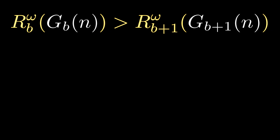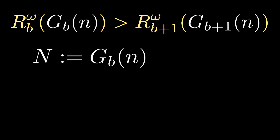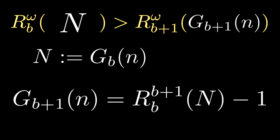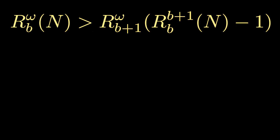Specifically, if we have two consecutive terms G_b and G_(b+1) of a Goodstein sequence, why is R_b_omega of G_b greater than R_(b+1)_omega of G_(b+1)? For notational simplicity, let's use n to denote this term G_b. Then, by definition, the next term after n in the Goodstein sequence is R_b_(b+1) of n, minus 1. So what we're trying to figure out is why R_b_omega of n is greater than R_(b+1)_omega of R_b_(b+1) of n minus 1.